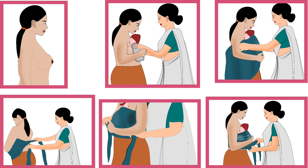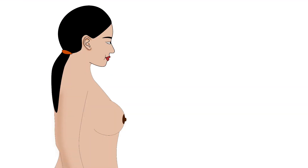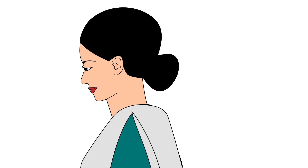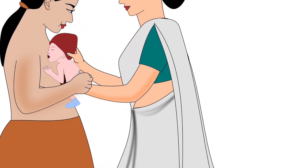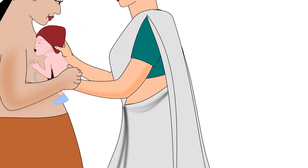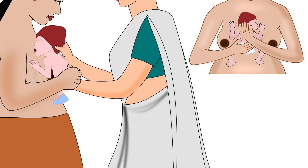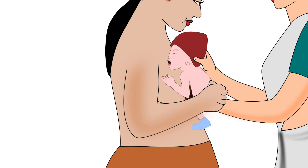We will now discuss the procedure of kangaroo care in detail. Firstly, the mother should stand in an upright position. Then, either a health worker or any family member should do the following steps: by supporting the baby's bottom and head, place the baby between the mother's bare breasts in an upright position. Then turn the baby's head to one side.